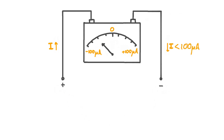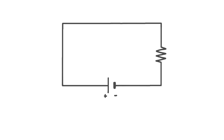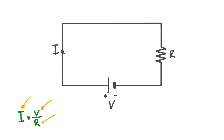So it looks like for small currents we could just use a galvanometer as an ammeter, and if we could find a way to extend the range of the galvanometer, we could use it for larger currents as well. However, if we try to just use a galvanometer as an ammeter, we run into a problem due to the fact that a galvanometer has its own internal resistance. To show why, let's consider a simple circuit containing just a cell and a resistor. The cell provides some voltage V across resistor R, creating a current I. Ohm's law tells us the current equals V divided by R.